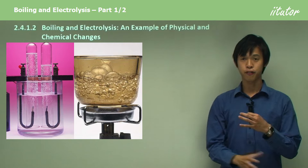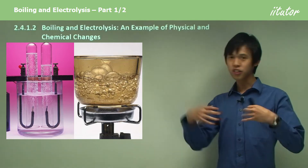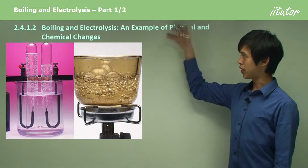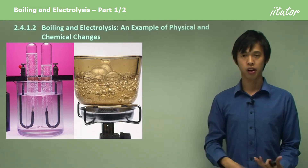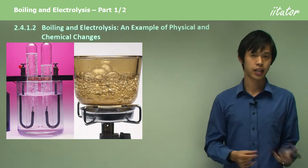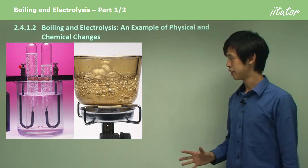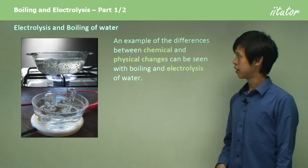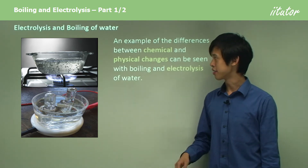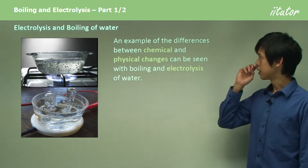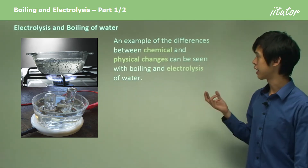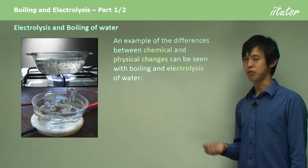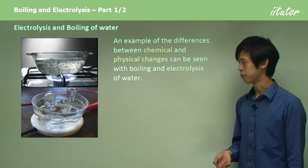In today's lesson we're going to focus on a case study — boiling and electrolysis — as an example of a physical and a chemical change. This will be like a case study in physical and chemical changes: electrolysis and boiling of water. An example of the differences between chemical and physical changes can be seen with boiling and electrolysis of water.